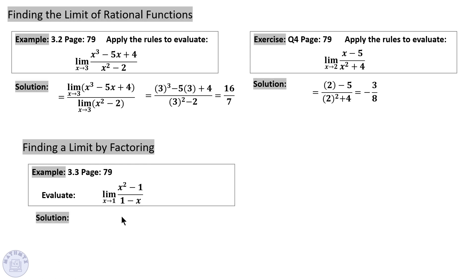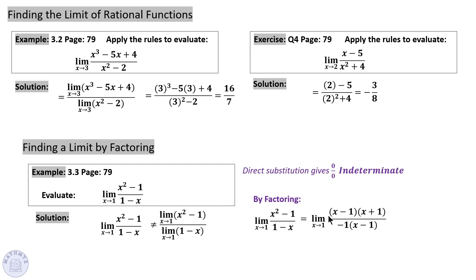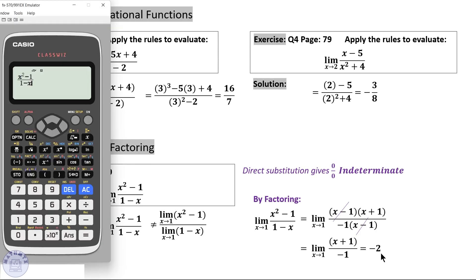In this question, if you substitute you get 0 over 0 — this is called the indeterminate form. When you get this form, you need to try another method. By factoring the numerator using the difference of squares (a² − b² = (a − b)(a + b)), and in the denominator taking negative 1 as a common factor, the factors cancel, leaving x + 1 over negative 1. Now you can directly substitute to get negative 2.